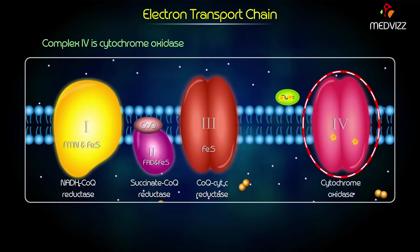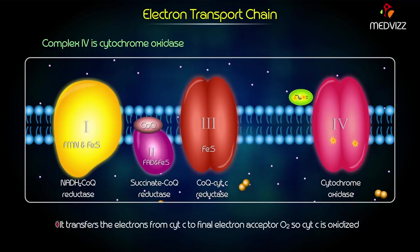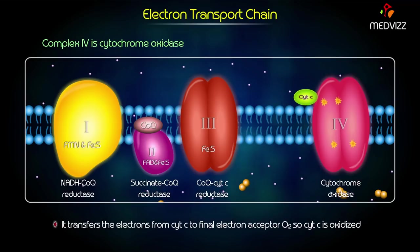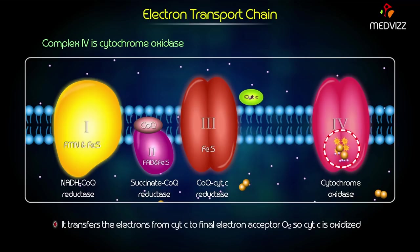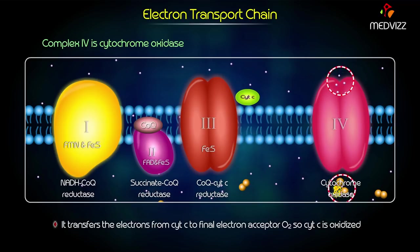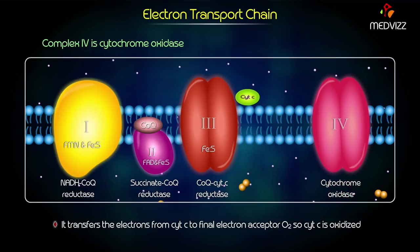Complex 4 is cytochrome oxidase. It transfers electrons from cytochrome C to the final electron acceptor, oxygen. Hence, cytochrome C is oxidized.